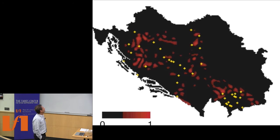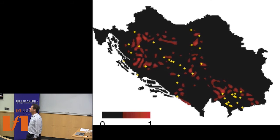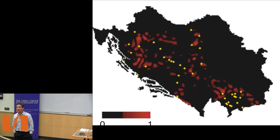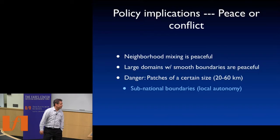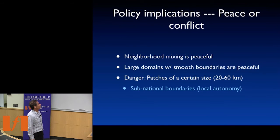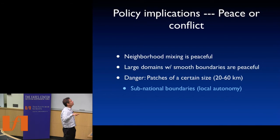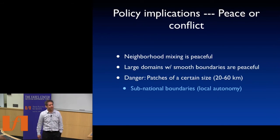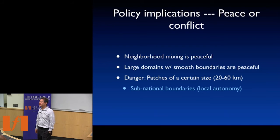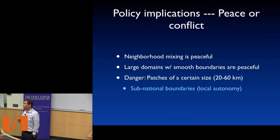Ethnic violence occurs at that intermediate patch size. Yellow marks the places of large events. How did we do? Incredibly well — there's a 90% geographical correlation. The implications are: first, neighborhood mixing is peaceful; within a neighborhood, integration works. Second, large domains with smooth boundaries are peaceful. Third, patches of a certain size are a danger, but all you have to do is create subnational boundaries appropriately. Our theory doesn't tell you exactly what it looks like, but you're good.